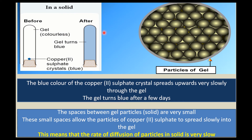The blue colour of the copper-2-sulfate crystal spread upward very slowly through the gel. The gel turns blue after a few days. The spaces between the gel particles are very small. These small spaces allow the particles of copper-2-sulfate to spread slowly into the gel. This means that the rate of diffusion of particles in solid is very slow.